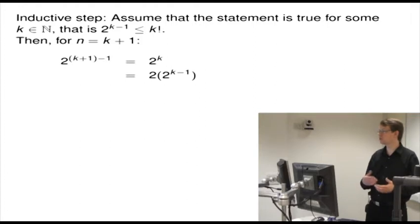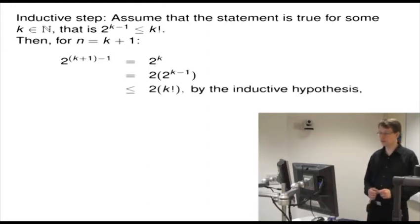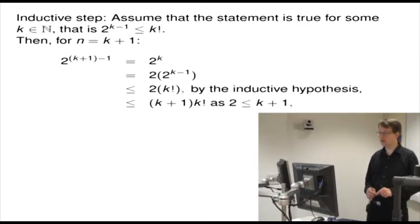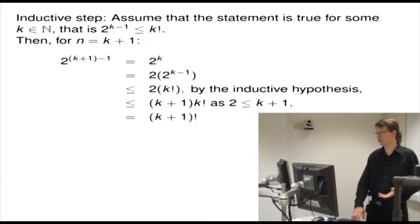I've managed to tease out something involving 2 to the power k minus 1, something which I've assumed something about. So by the inductive hypothesis, that's less than or equal to 2 times k factorial. Then that is less than or equal to k plus 1 times k factorial, because 2 is going to be less than or equal to k plus 1, since k is always greater than or equal to 1. So we can replace the 2 by k plus 1 there, and then that's just equal to k plus 1 factorial.